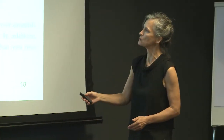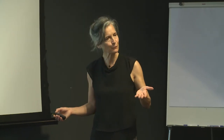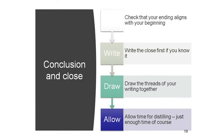Just to highlight it. Grace, I'm just wondering about the recommendation part. But I just quickly want to highlight one more thing: importantly, 'if your separate savings plan earns an interest rate which is lower than 12.7%, you face the possibility of being unable to fully replace your retirement income.' Do you notice that this comes after that explanation, and we also had an 'importantly' after the other explanation? I thought that was rather neat — it spoke to the planning and structure of this piece. Check that your ending aligns with your beginning. Write the close first if you know it. Draw the threads of your writing together and allow time for distilling.